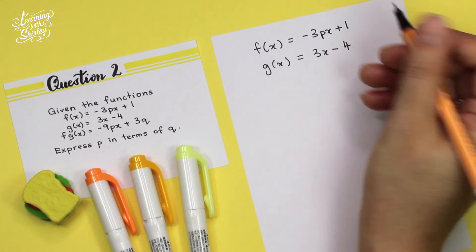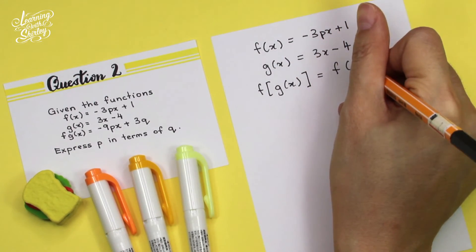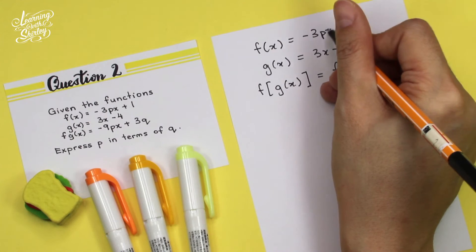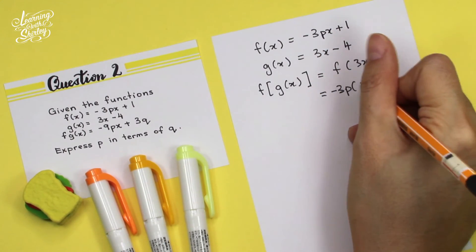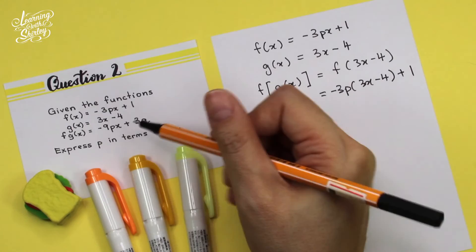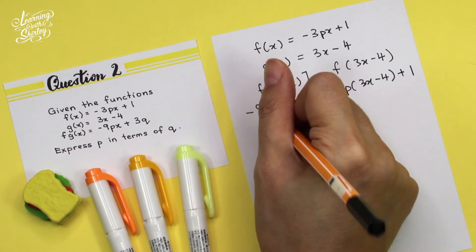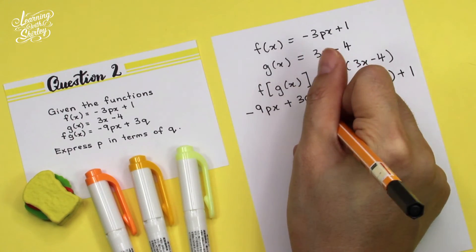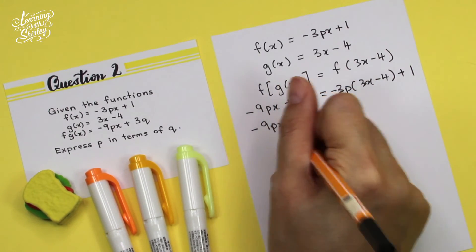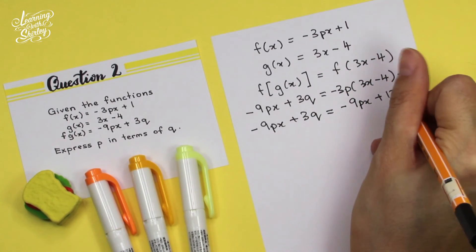Next, we derive our own fg(x) and then compare with the fg(x) given in the question. We substitute g(x) = 3x minus 4 into f, giving negative 3P(3x minus 4) plus 1. We also put in the given fg(x) = negative 9Px plus 3Q on the other side so we can compare. Expanding the bracket: negative 9Px + 3Q = negative 9Px + 12P + 1.